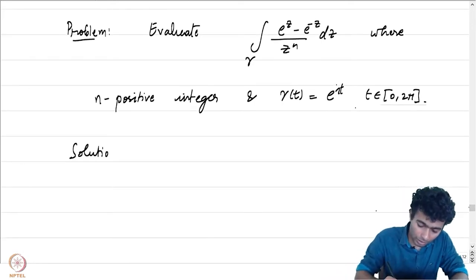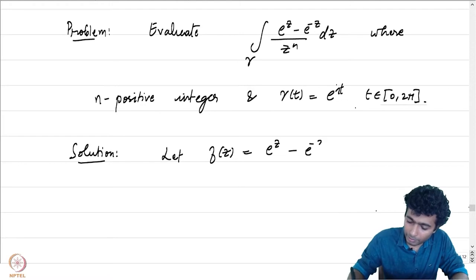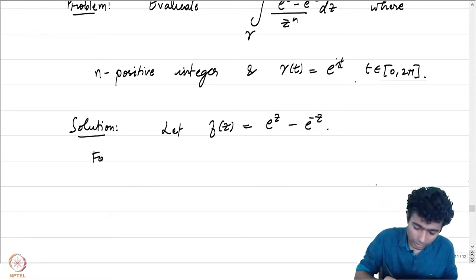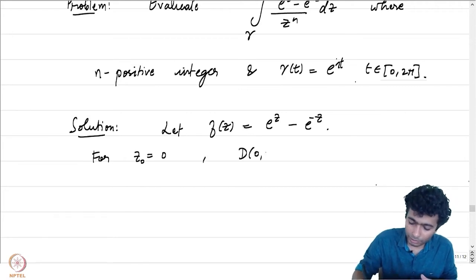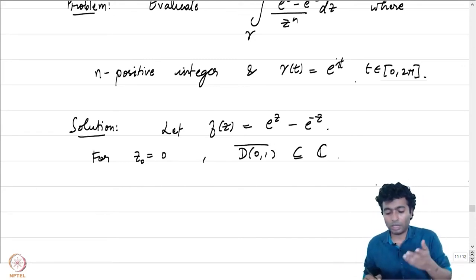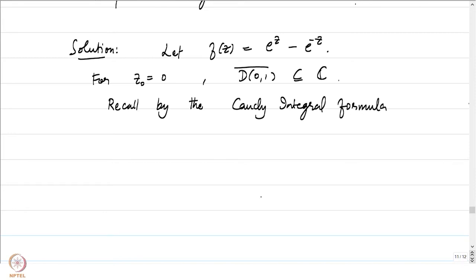Let us look at a solution. Let f(z) = e^z - e^{-z}. The first thing to note is that f is an entire function, and because of that, for z₀ = 0, if you look at B(0,1) bar, this is certainly contained in the domain of definition of f(z). Recall by the higher-order Cauchy integral formula, the nth derivative at a point z₀ — in our case z₀ is just the origin — is going to be equal to n! / (2πi).